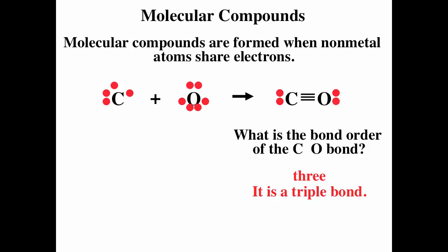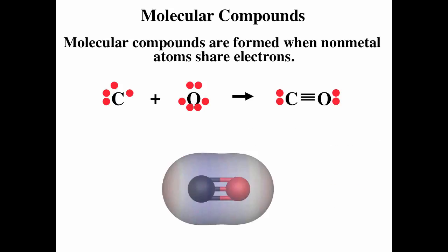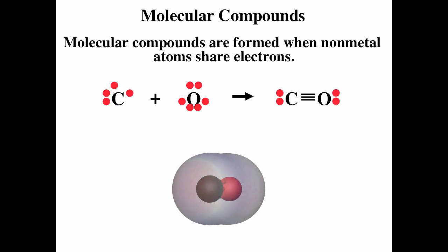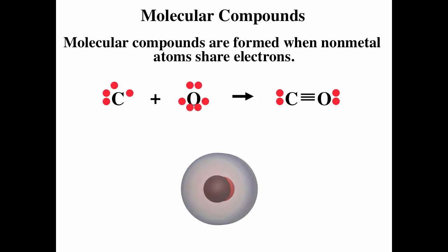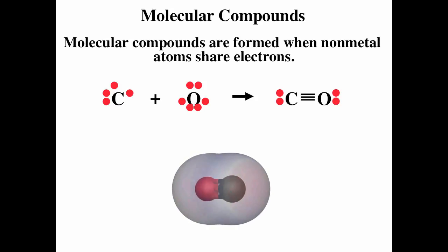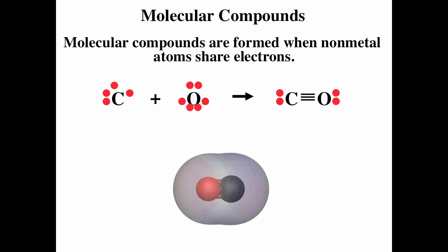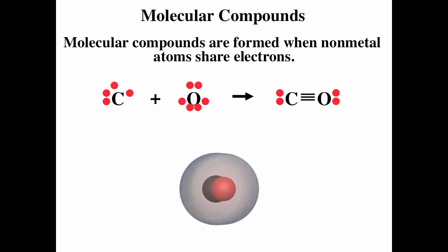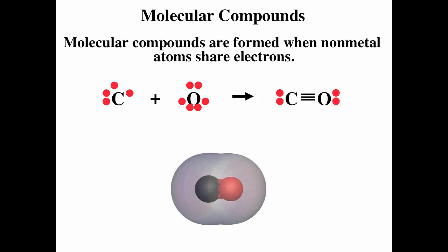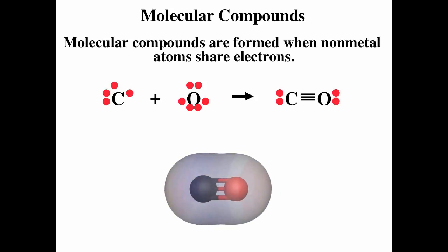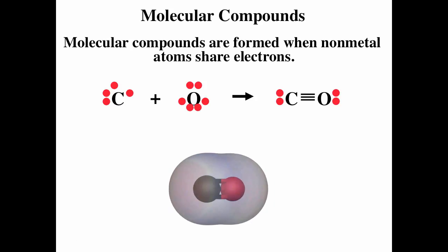The actual structure of carbon monoxide looks something like this — the surface represents the valence electron density and the coloring corresponds to electrostatic potential. Lewis electron dot diagrams are very, very important and you'll use them throughout your chemistry career.